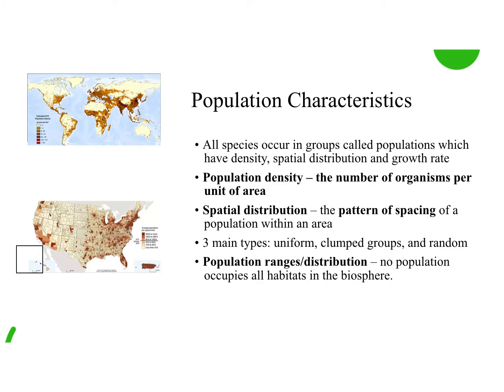Today I'm going to start off with just looking at characteristics. So if an ecologist is interested in a population, they're going to be specifically interested in a couple of different characteristics such as density, the spatial distribution, the growth rate, and maybe where this population is located. The first one is population density — that is just the number of organisms per a designated unit of area.